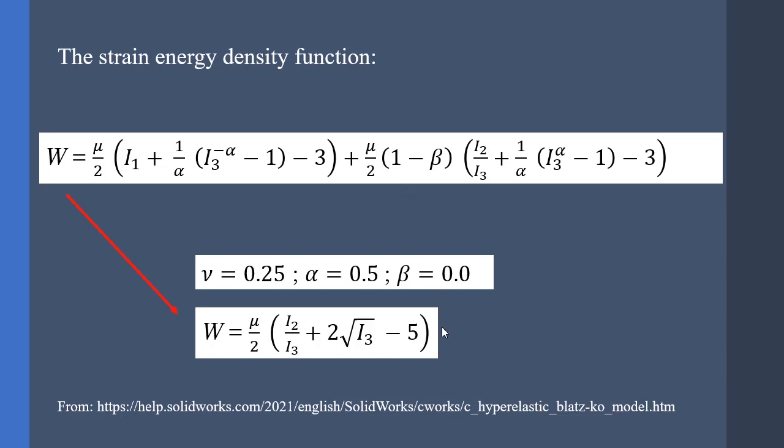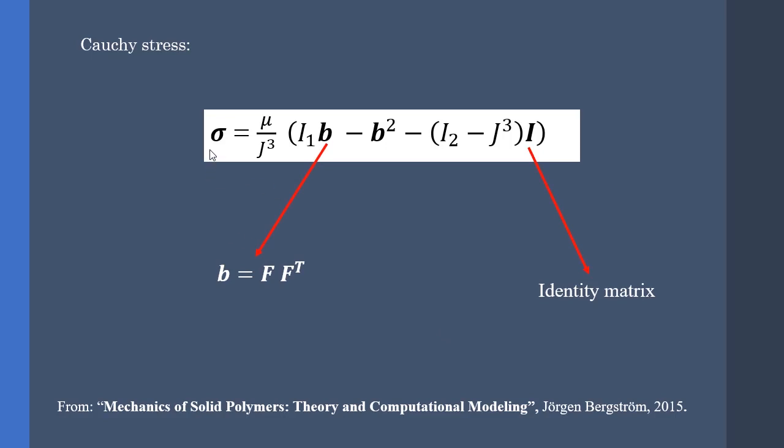For the simplified model, the Cauchy stresses are obtained by this relation in which I is the identity matrix and b is the left Cauchy-Green deformation tensor, obtained by multiplying f with f transpose.